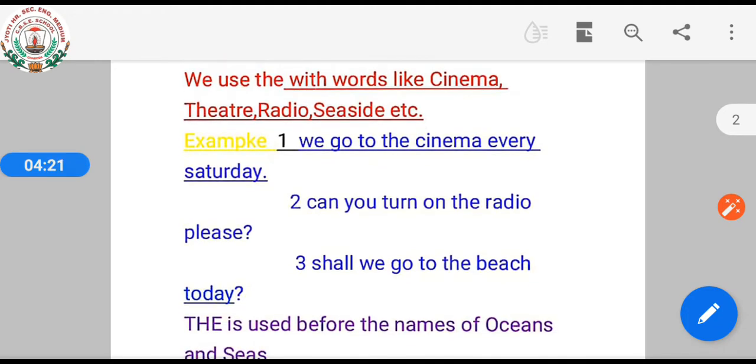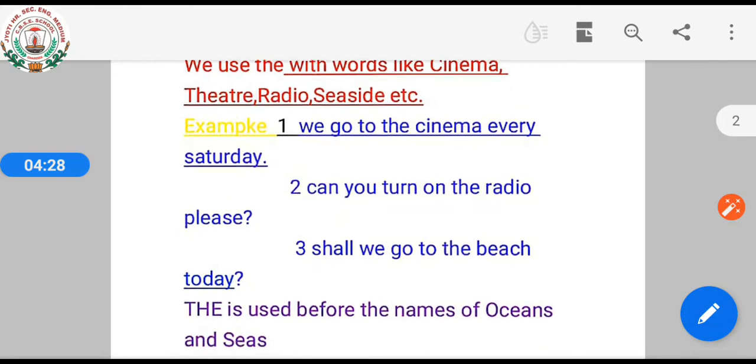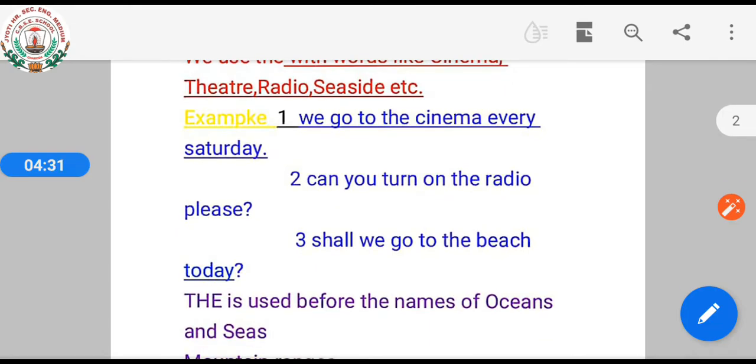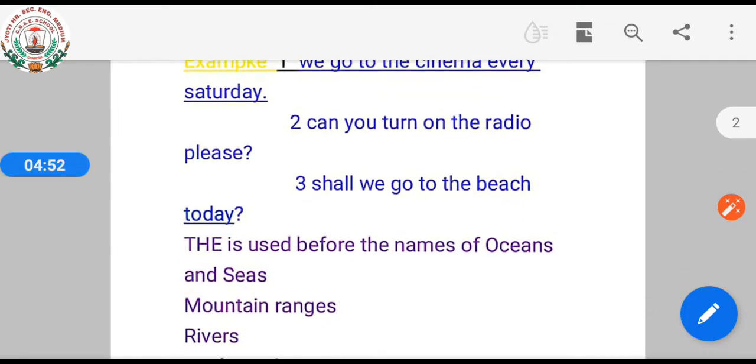Before a common noun in singular form to denote a class. For example, the rose is the queen of flowers. The lion is the king of the jungle. Here we are talking about the class of flowers or class of animals. So we use 'the' here.